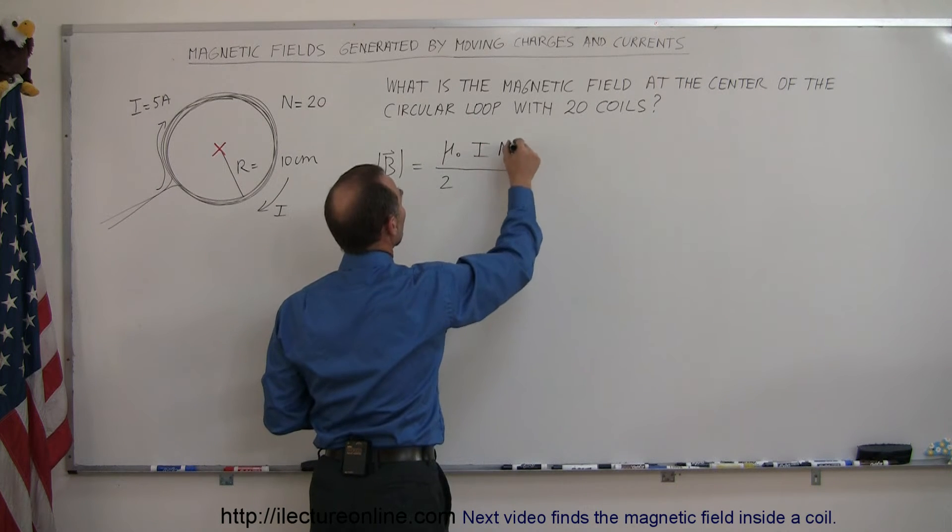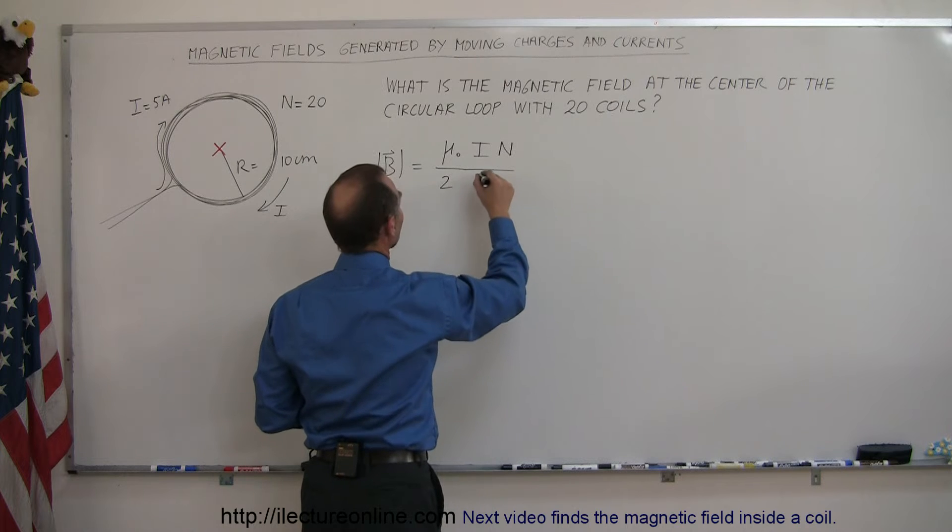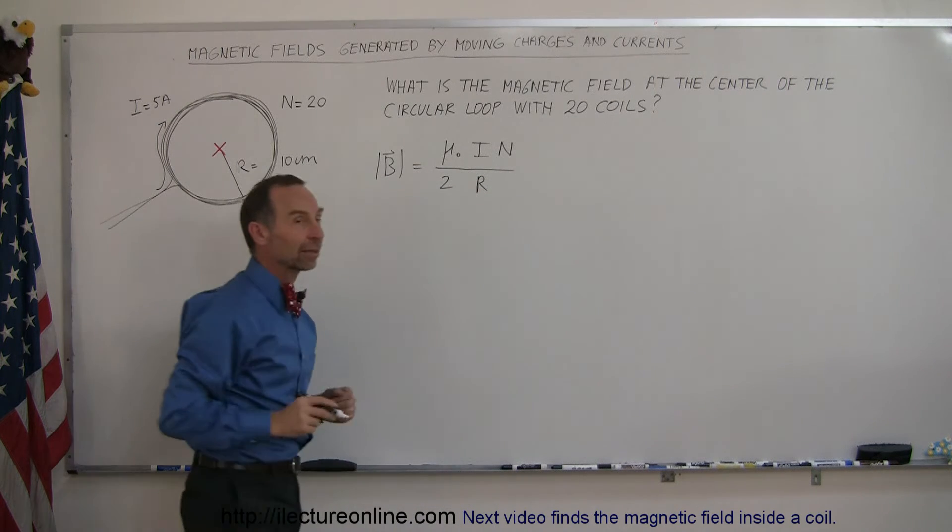multiply times the number of loops that you have, n, divided by the radius of that loop, r.